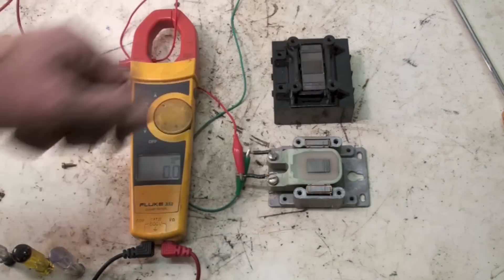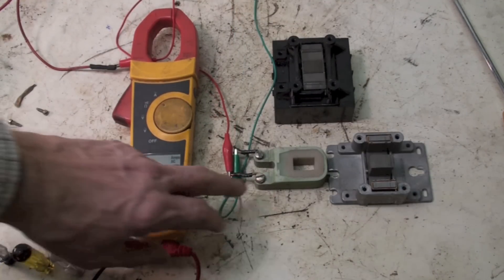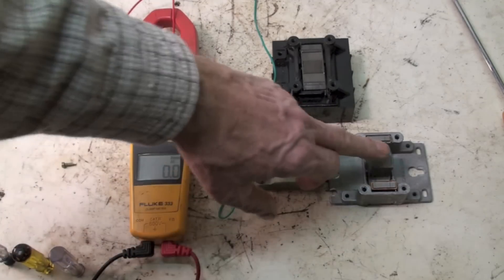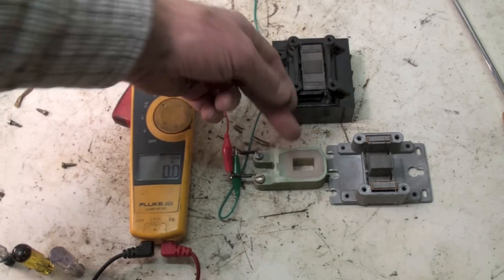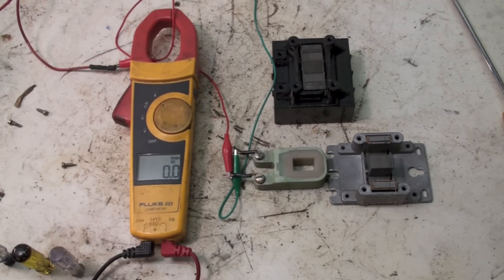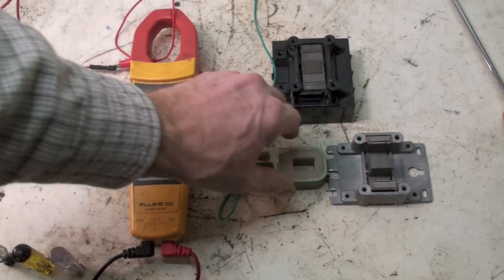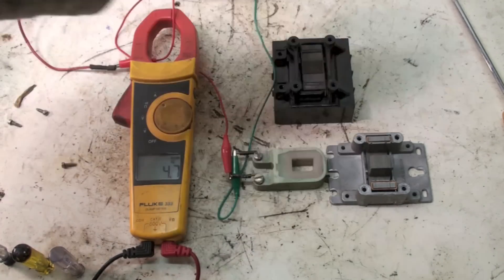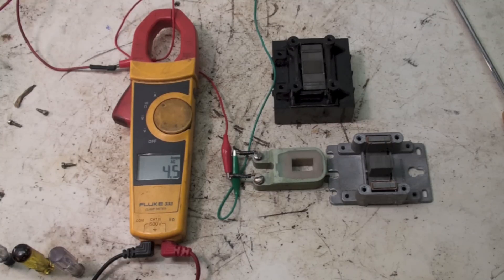Now I have taken the coil completely off the core. The core is right there, the coil's right here. Plug it in again. Now we're going five amps - that's going to burn this coil up in a very short time. It's already getting hot.